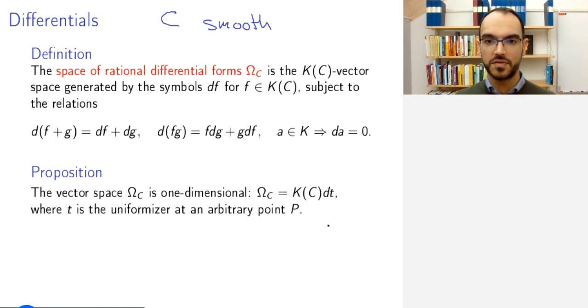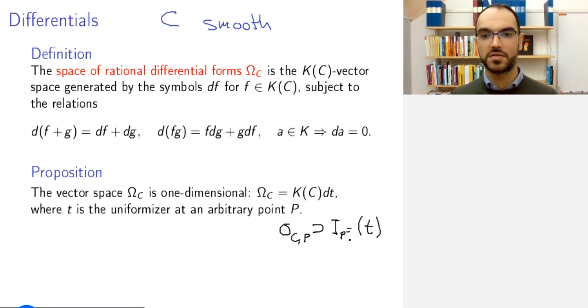So, what does this uniformizer mean? At p, the local ring is a discrete valuation ring. This has a maximal ideal, the ideal i_p, which is principal, and a uniformizer is any generator of the principal ideal in a discrete valuation ring, any generator of the maximal ideal in a discrete valuation ring.